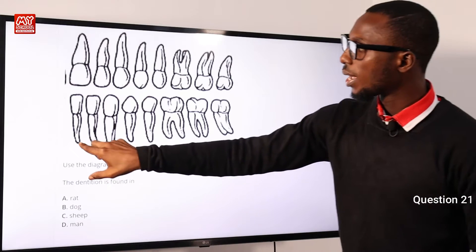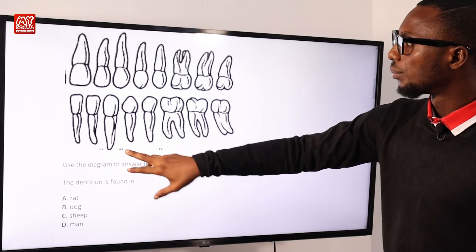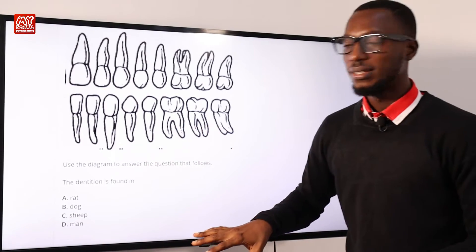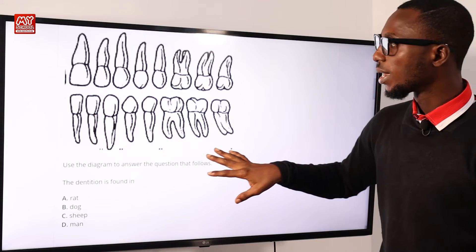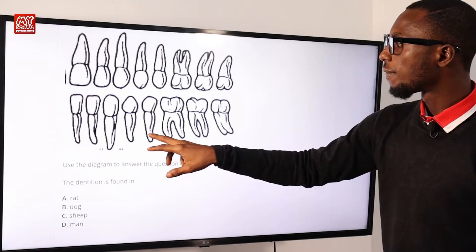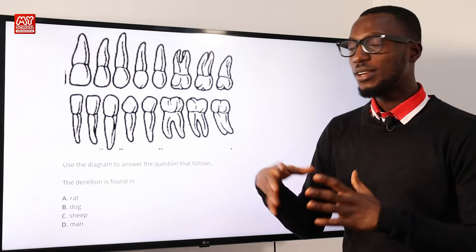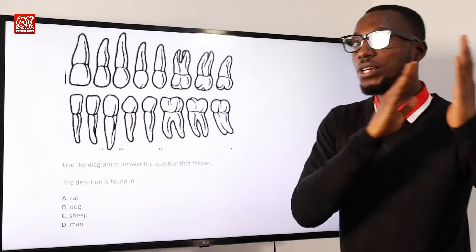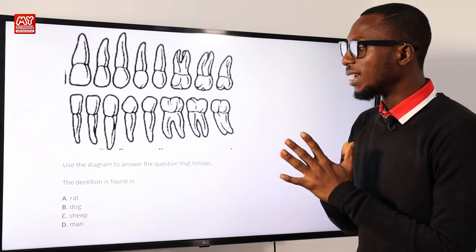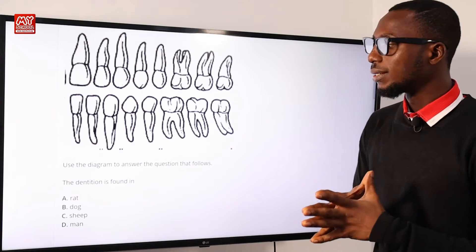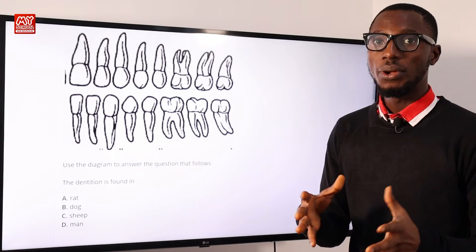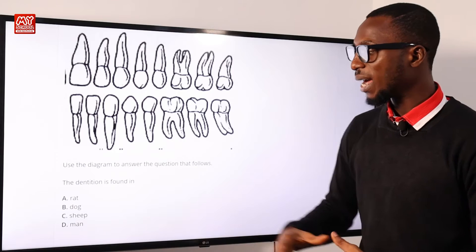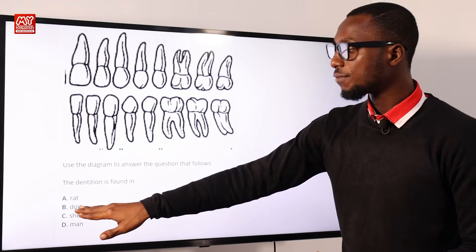Looking at the number of teeth, we count two incisors, one canine, two premolars, and three molars — that's eight on one side. Eight lower and eight upper makes 16, then the other side makes 32. This is the dentition of man. But we haven't ruled out sheep yet, because the dentition of sheep is also 32 teeth, just like in man.